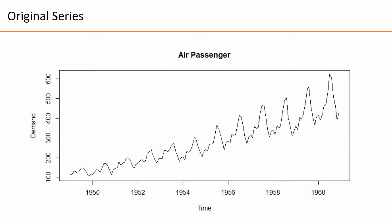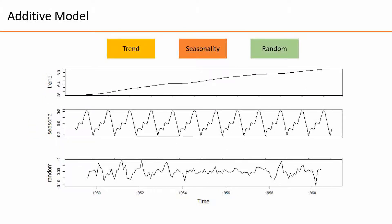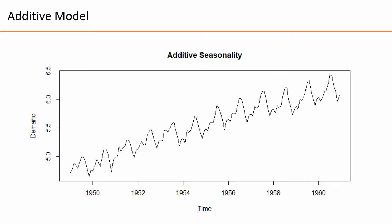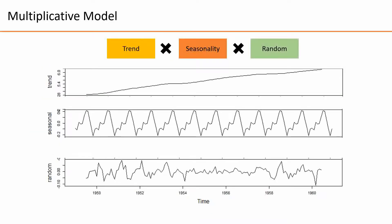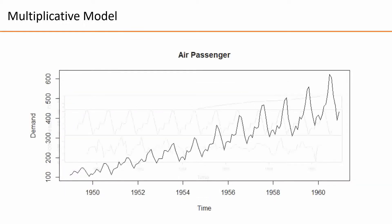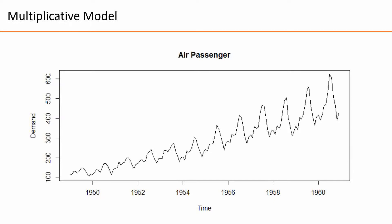The question is how do we put these components together. There are two ways. The first is to add all components together — we call this the additive time series model. However, an additive model doesn't show seasonality with increasing or decreasing amplitude; the waves have nearly the same amplitude. The second way is to multiply the components — we call this the multiplicative time series model. This model may better replicate the original series as it can account for increasing or decreasing seasonal patterns. In summary, additive models add all components, while multiplicative models multiply all components.